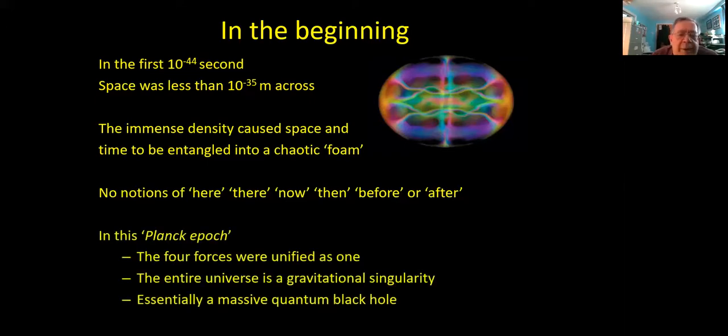So this is called the Planck Epoch, and it's the time when all four of the forces, gravity, the strong nuclear force, the weak force and electromagnetism, were all combined as one unified single entity. And the whole universe is a gravitational singularity, essentially a massive, highly energetic quantum black hole. Now, we can say all of this, we can't do the maths because our equations blow up in our face at this level. So this is a strong hypothesis rather than what you might call a solid theory.